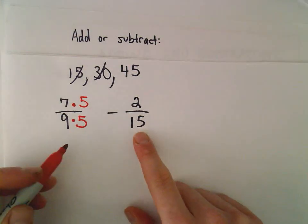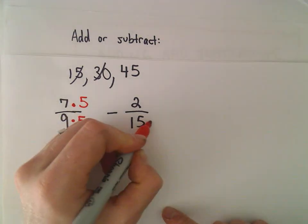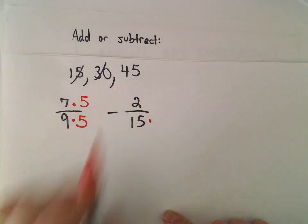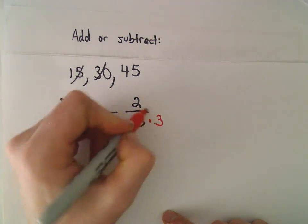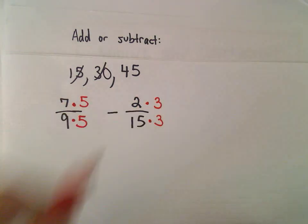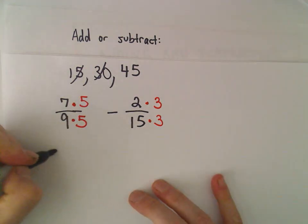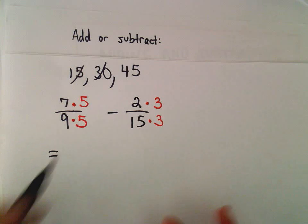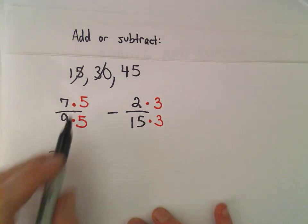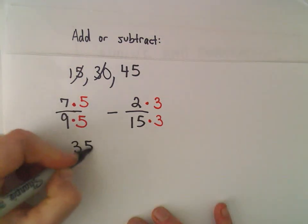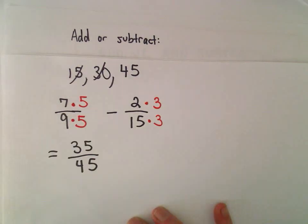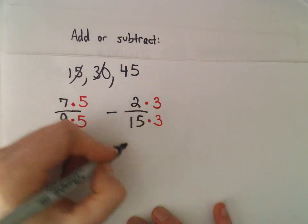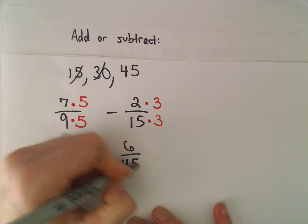So the same thing with the next one. I want a 45 in the denominator. Well, 15 times what is 45? 15 times 3. So we'll have to multiply the numerator as well. And now we've kind of done the hard part. We're in business. We've found the common denominator. 7 times 5 is 35 over 45. 2 times 3 is 6 over 45.